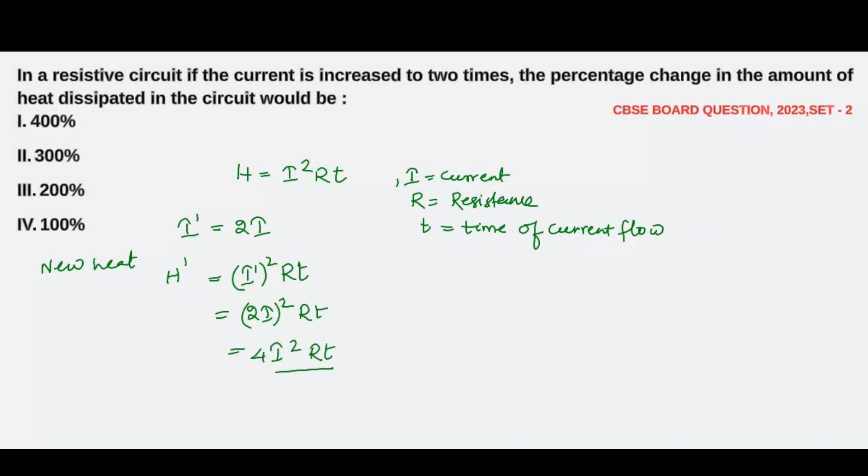So what is I²RT? I²RT is nothing but our heat H. So H' = 4H. The new heat generated would be 4 times the original amount of heat which was generated. Now we have to find out the change in amount of heat.